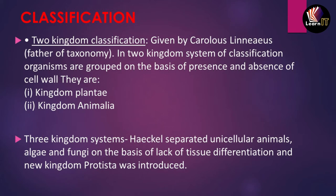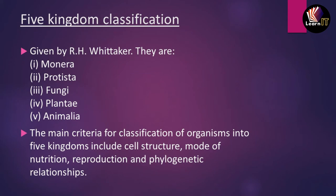The five-kingdom classification was given by R.H. Whittaker, and it is the universal classification accepted worldwide. He divided organisms into five kingdoms: Monera, Protista, Fungi, Plantae, and Animalia. He classified them based on cell structure, mode of nutrition, type of reproduction, and phylogenetic or genetic relationships with different organisms.